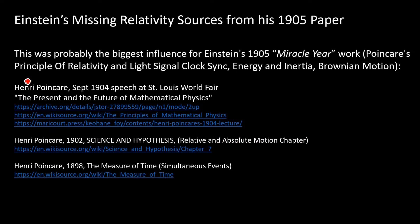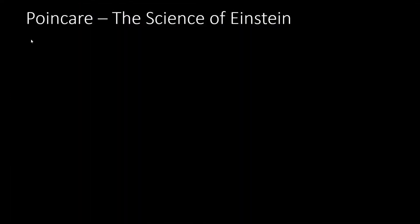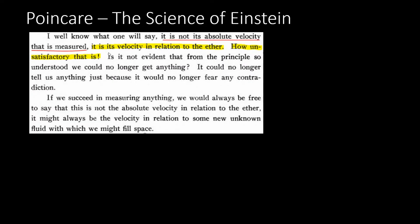Einstein's best thought experiment was to read a paper from Henri Poincaré. Let's look at this 1905 translation of Poincaré's World's Fair speech. At the time, Poincaré was the leader in this idea of the principle of relativity. In his speech, he was venting his frustration about velocity in relation to the ether — how unsatisfactory that is.